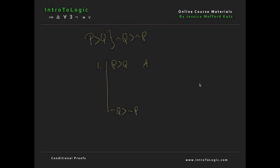According to conditional proof, we can derive a conditional within a proof by three simple steps. First, you're going to assume the antecedent of the conditional that you're trying to prove. Notice that I've drawn another scope line here — the scope line allows us to section off this sub-proof within the larger proof. So we write not q as our second assumption, labeled 'A for CP', which stands for assumption for conditional proof. At the bottom of this second scope line, we write the consequent of the conditional we're trying to prove, which in this case is not p.